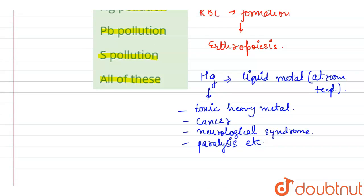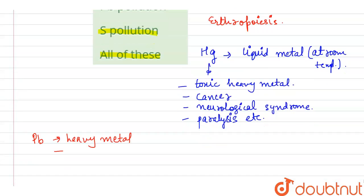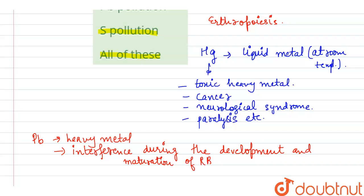If we see the next element, the next metal is lead. Lead, that is Pb, is a very heavy metal which shows interference during the development and maturation of red blood cells.